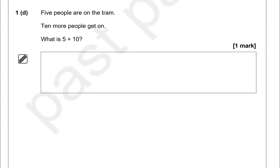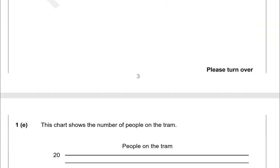5 people are on the tram and 10 more people get on. What is 5 plus 10? Starting with 10, add 5: if you add 0 to 5 that's 5, and then 1 with nothing added gives us 1, so the answer is 15. If you're not comfortable with this, you could start with 10 and count up: 11, 12, 13, 14, 15 — that's 5 additional ones. So 15 is the answer.